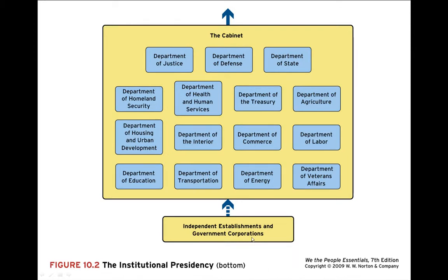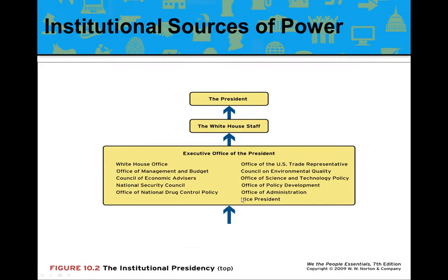There are also different institutions and government corporations — like Fannie Mae and Freddie Mac — that are part of the executive branch. All of these, top and bottom, work together to bring information and institutional sources of power to the president.